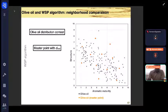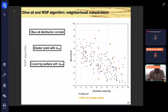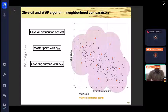For example, we can build a covering surface. The covering surface will include all olive oils with similar structure and maturity for the first master point, for the second, and we cover the whole space in this way.